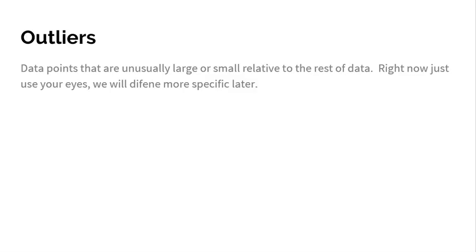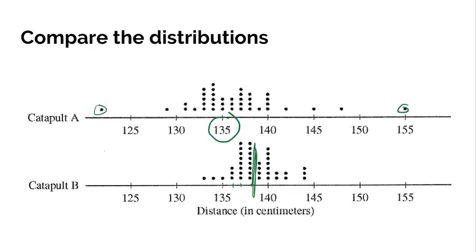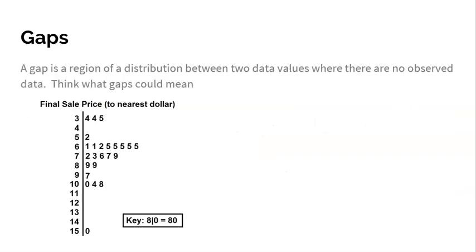All right, outliers is something else worth mentioning. Obviously, you guys know what an outlier is. It's an unusually large or unusually small data value relative to the rest. For right now, I just kind of want you to use your eyes, and we'll define it a little bit more specifically later. If I'm looking at catapult A, I would probably mention that it might have some outliers. It does appear to have a really small throw down here to 120, a very large throw at 155. Could be worth mentioning those things, whereas catapult B doesn't really have any outliers. So make sure you talk about shape, center spread, and then like a maybe. If you see outliers, it's worth mentioning it, especially when you're comparing these two graphs. I would definitely mention the lack of outliers for catapult B.